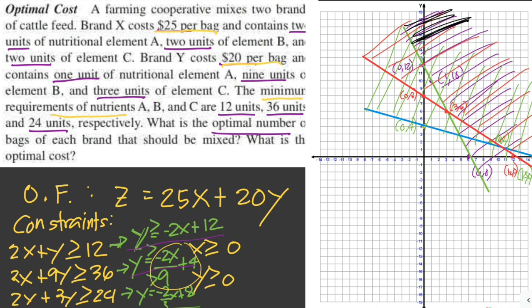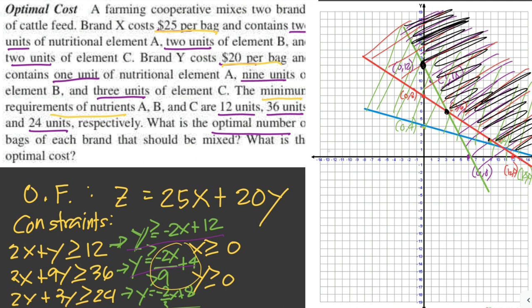So the feasibility region is this part here. Now we can use the corner values: (0, 12), (9, 2), and (18, 0). So the vertices will be (0, 12), (3, 6), (9, 2), and (18, 0). Now we can use these points to solve for the optimal value using the objective function.